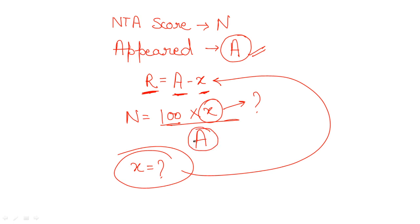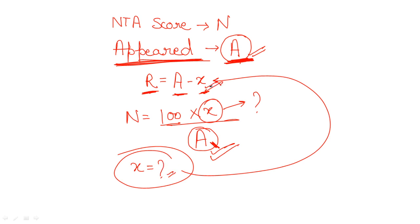For a category-wise rank, change the appeared students value to the number of students who appeared from that particular category in the same stream. Solve for x again using those numbers and plug it into the rank formula to get your rank for that category.